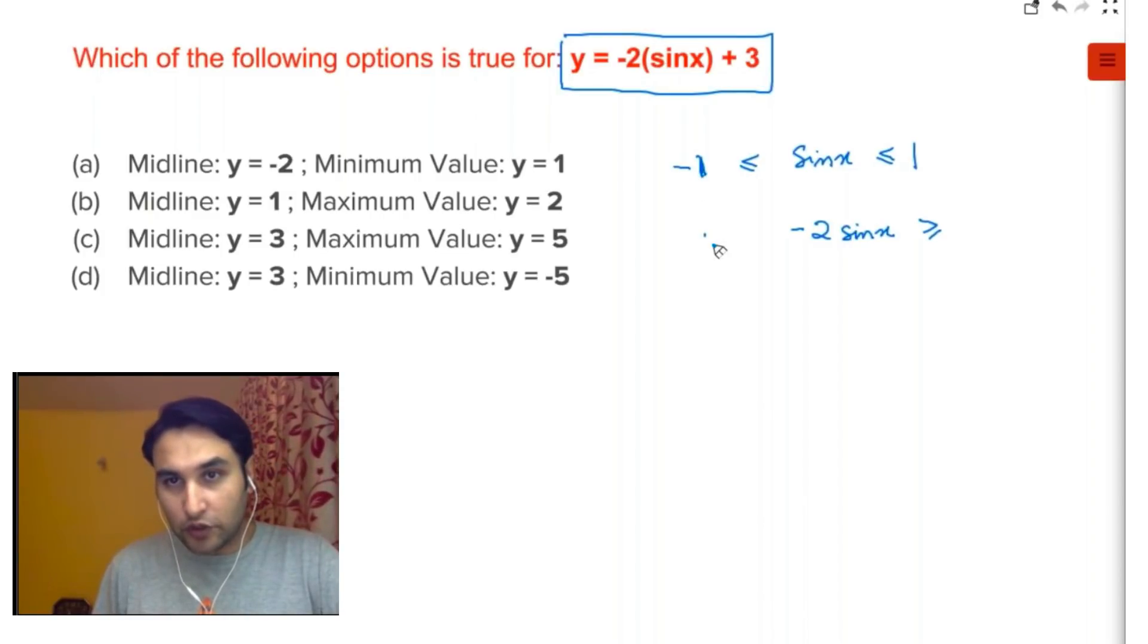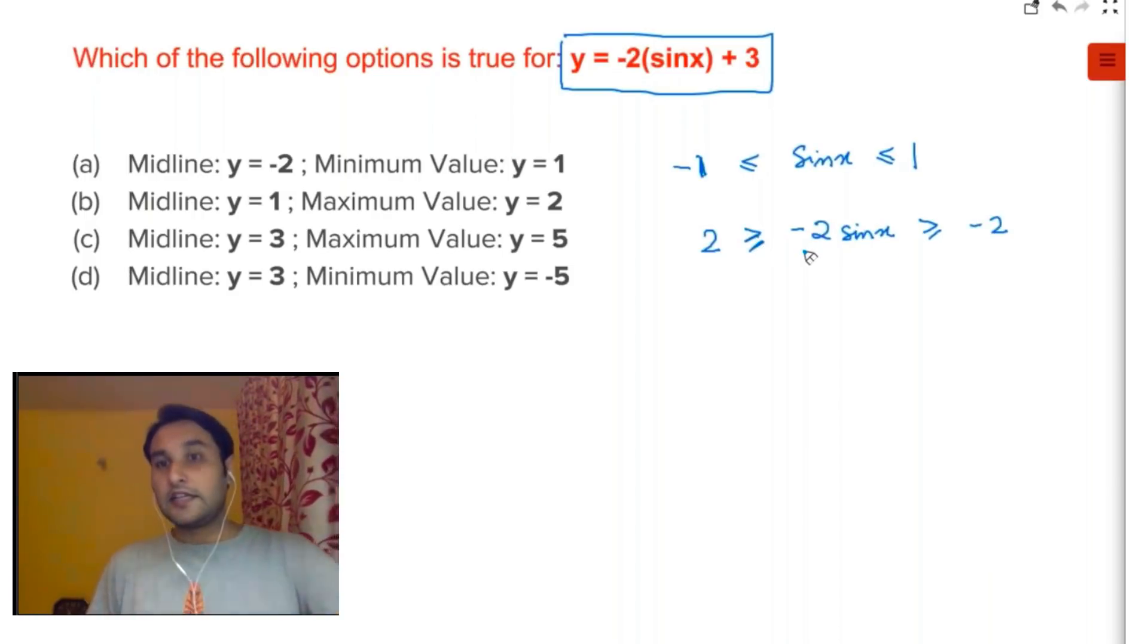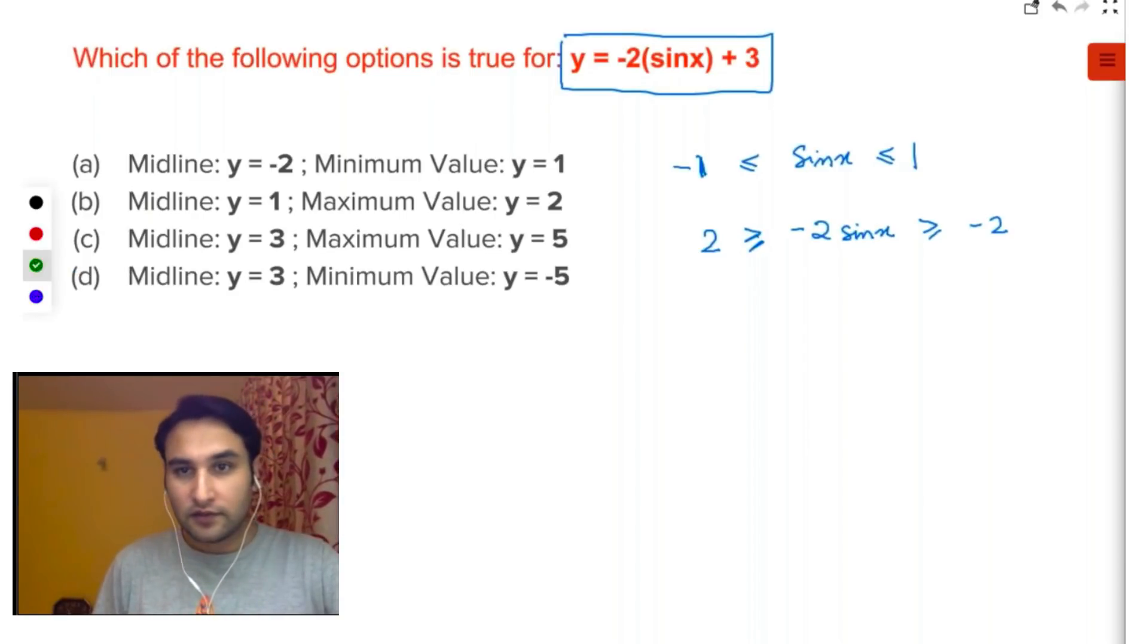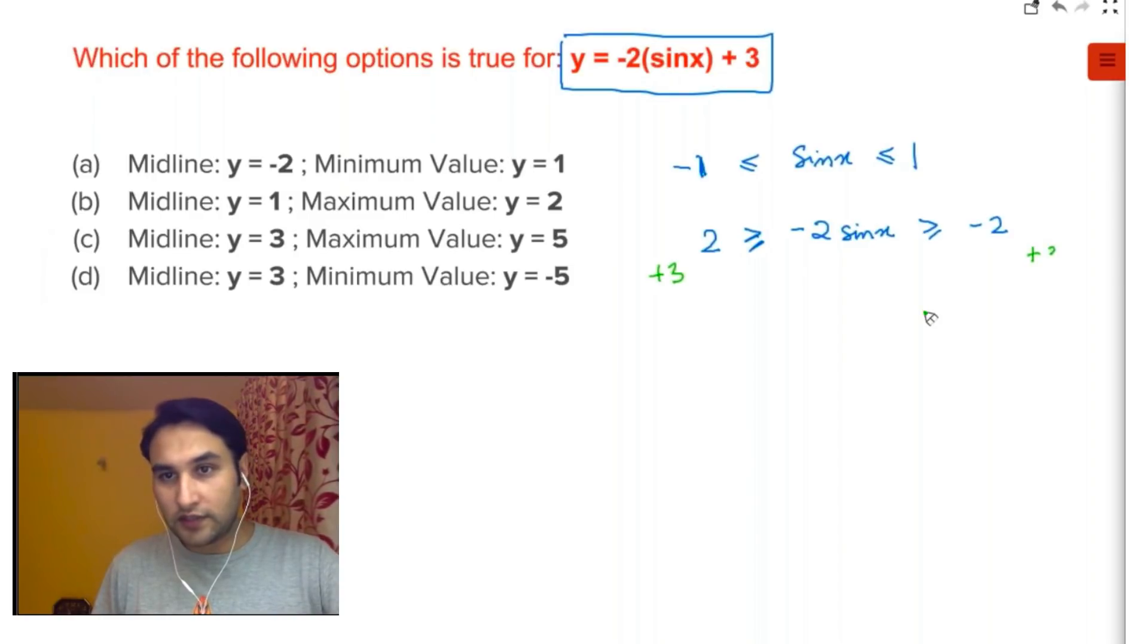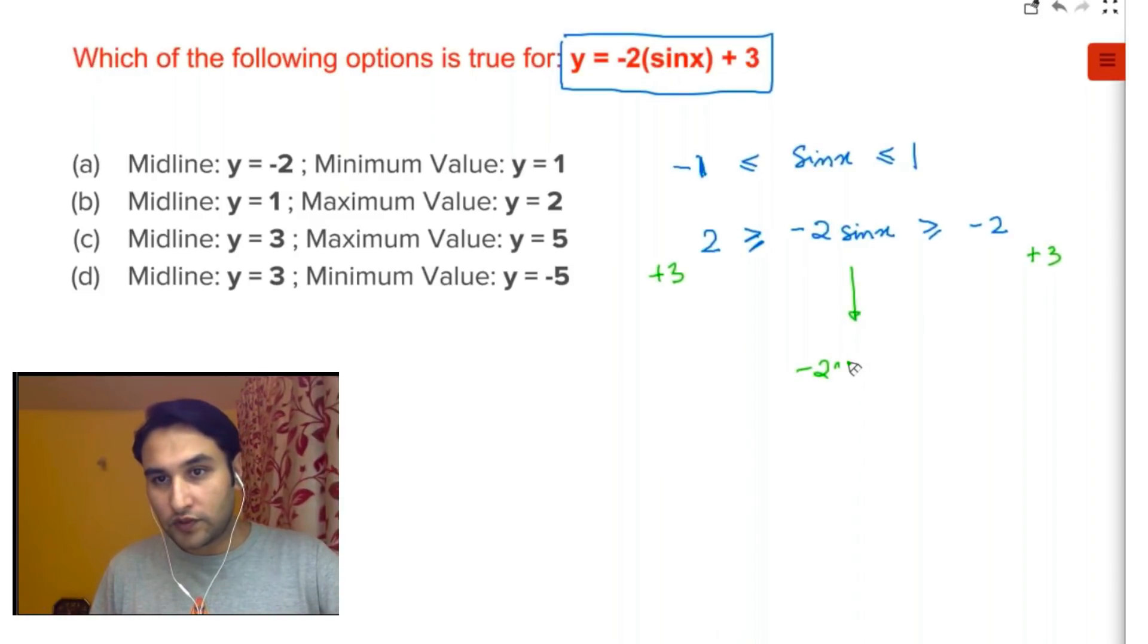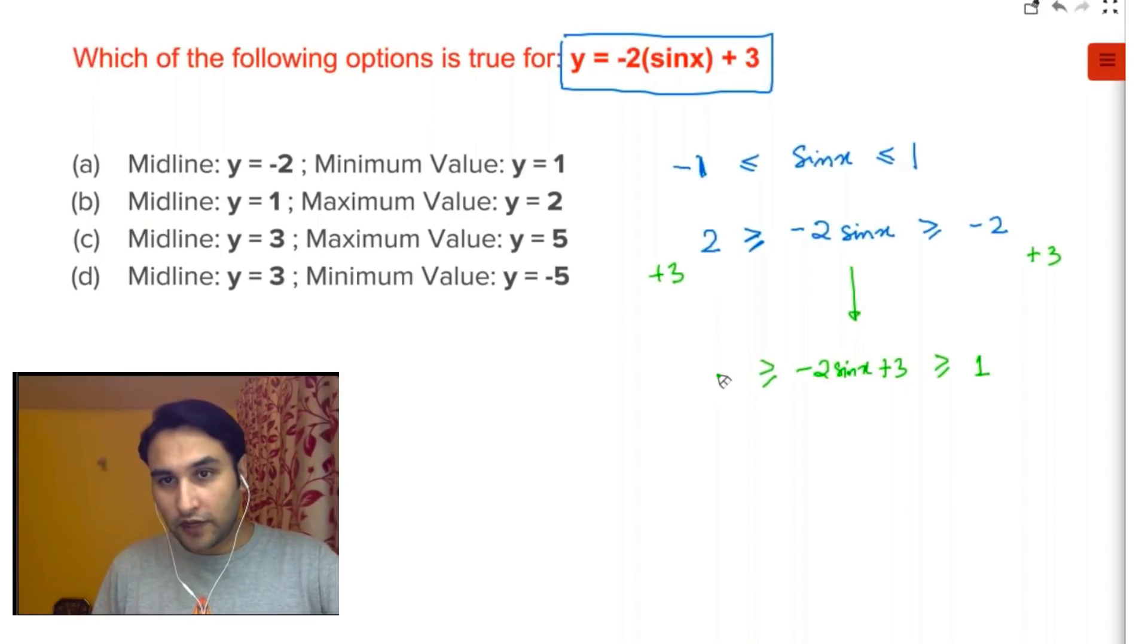When you multiply by minus 2, this will become 2, and this will become minus 2. But whenever you multiply by a minus number, the inequality changes. But still it lies between minus 2 and 2. Don't worry. But now when you add plus 3, now what you do is add plus 3 on all the sides. So it will give you: -2sin(x) + 3 lies between 1 (that's 3 minus 2) and 5 (that's 3 plus 2). If you want to write it in a correct order, 1 to 5.